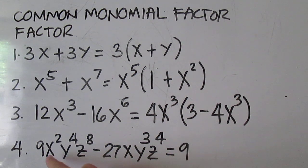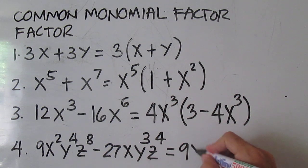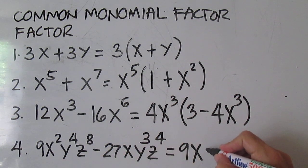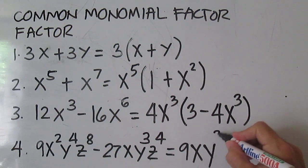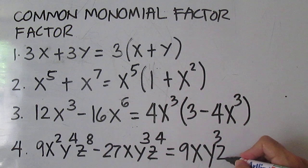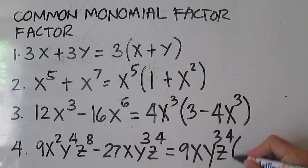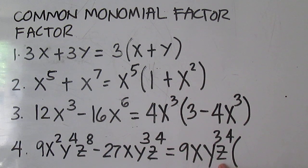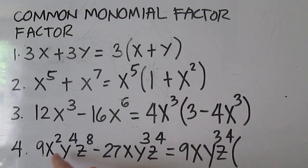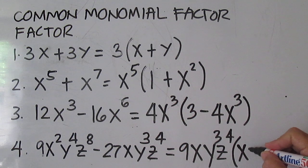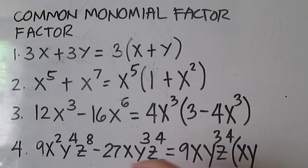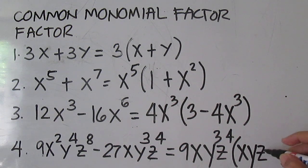For number four, the common monomial factor is 9 for the numerical part; for x, we have x squared; for y, we have y cubed; and for z, we have z to the power of 4. To get the other factor, divide each term by this common monomial factor. 9 divided by 9 is 1; x squared and x gives x; y to the power of 4 and y to the power of 3 gives y; z to the power of 8 and z to the power of 4 gives z to the power of 4.